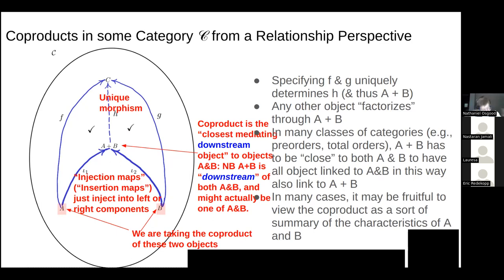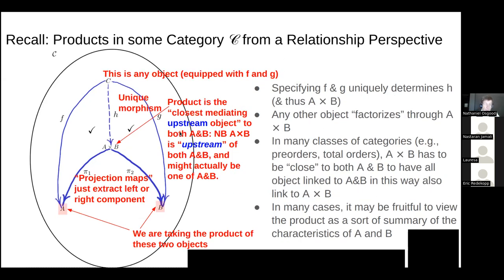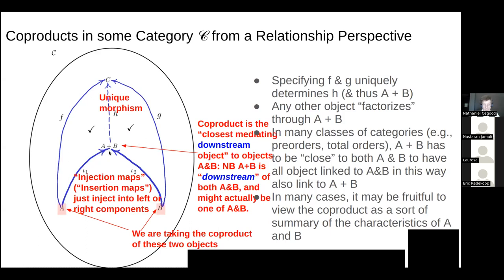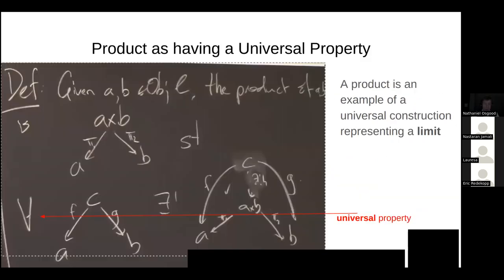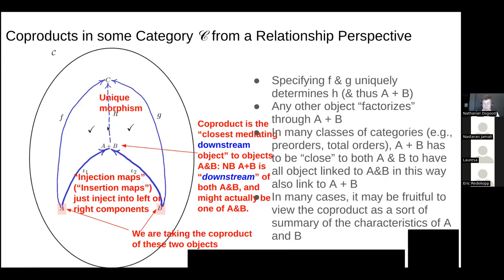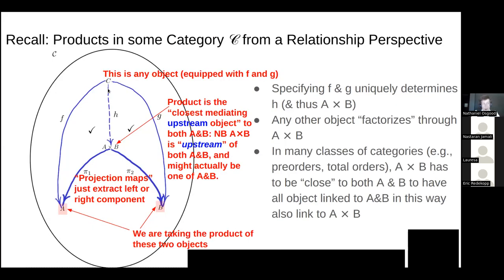In many programming languages, co-products are represented as an Either type — you have either this or that. It's just as rich as a product; you get it for free as the dual. It has a universal property, just in reverse: it's the closest mediating downstream object to both A and B, rather than the upstream one. The product is about storing both A and B; the co-product is the natural way to get something that's either from A or from B.